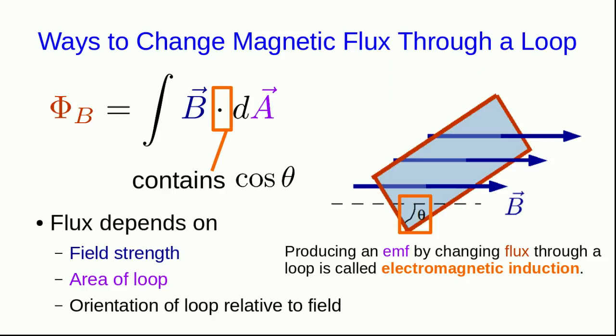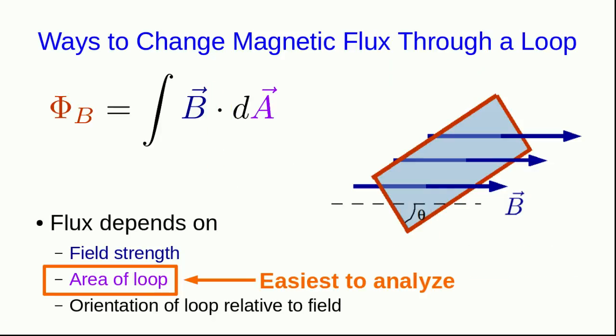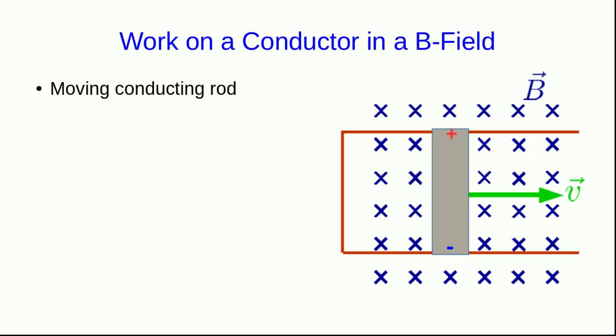We now want to develop an expression for Faraday's Law, and we're going to keep things simple. The easiest geometry to analyze is the situation where we change the area of the loop. Faraday's Law says that whenever the magnetic flux through a loop is changing, an emf is induced in the loop, and to get a more precise form we need a direct relationship between the rate of change of the flux and the emf. Here is our simple geometry: a moving conducting rod in contact with stationary wire rails as it moves through a uniform B-field.